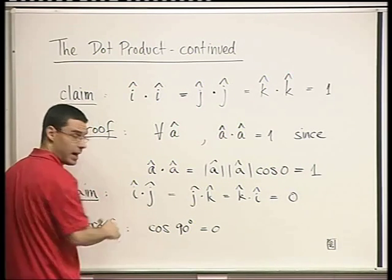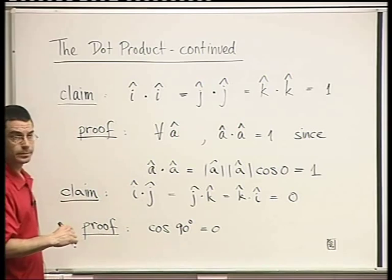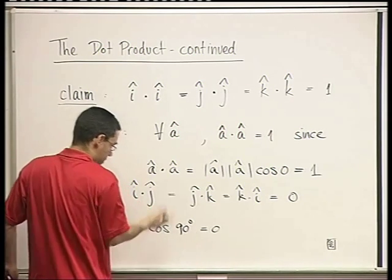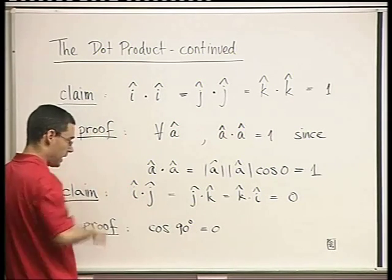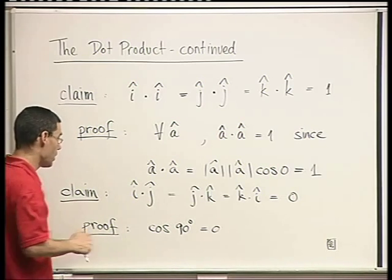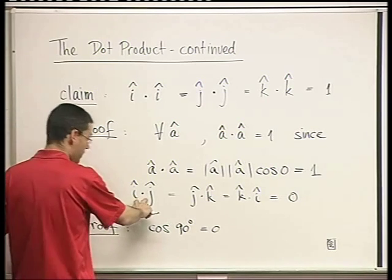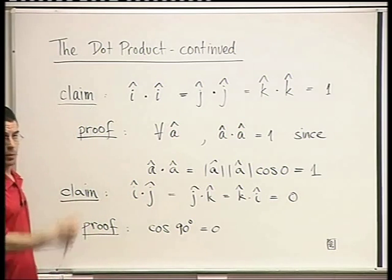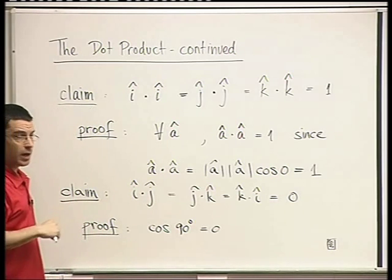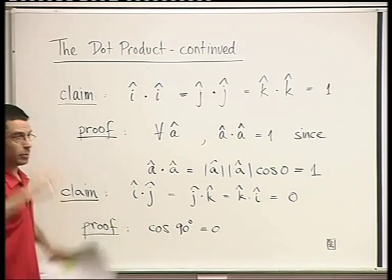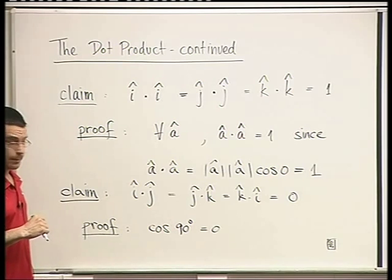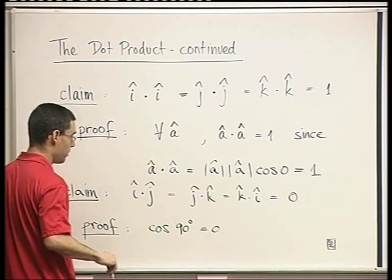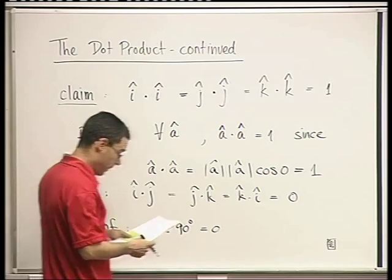By the way, what is j dot i? It's 0 for the same reason, because you're multiplying two perpendicular vectors. Or you can say j dot i is the same as i dot j — that was a property we established. So this is true, and we can reverse the order as well.